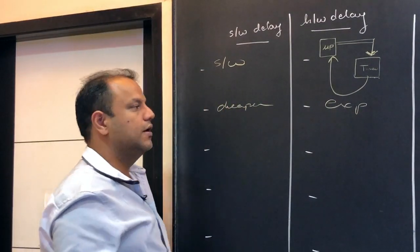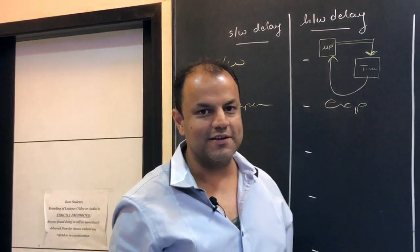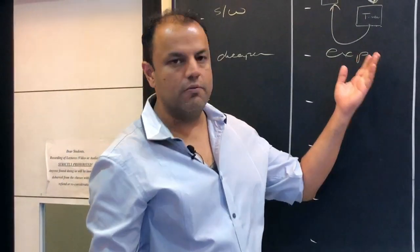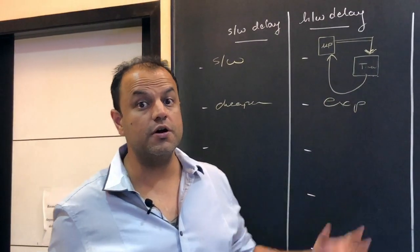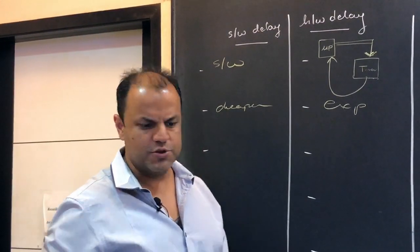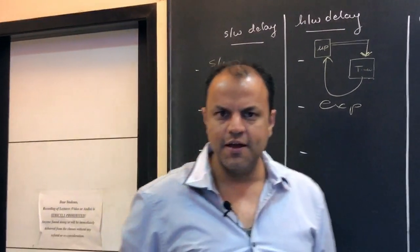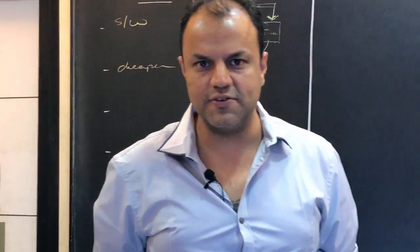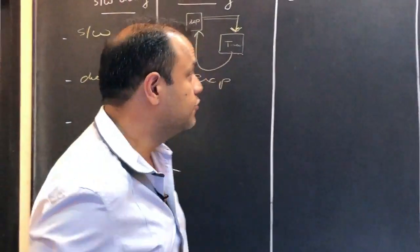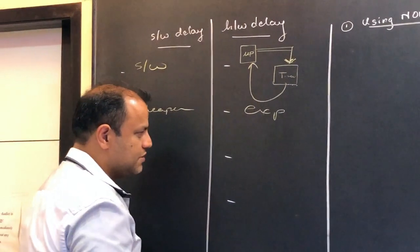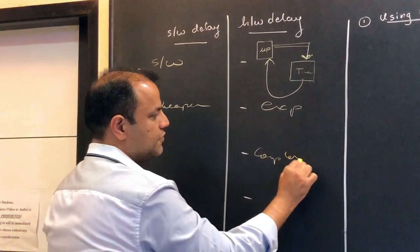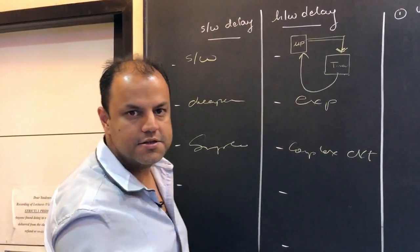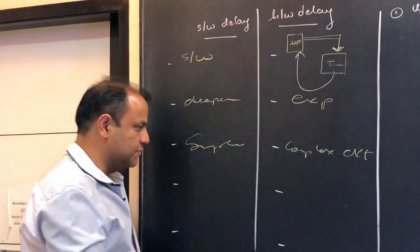Adding the timer chip also makes your circuit far more complex — address bus, data bus, control bus, decoding, everything has to be done. So it gives you a complex circuit. Software delay is a simple circuit because you're not adding any additional hardware — the circuit remains as it was. Further, software delay is more flexible. You write a loop and you get a delay. You want more delay? Put that loop into another loop. You want even more? Put it into another loop — there's no limit.